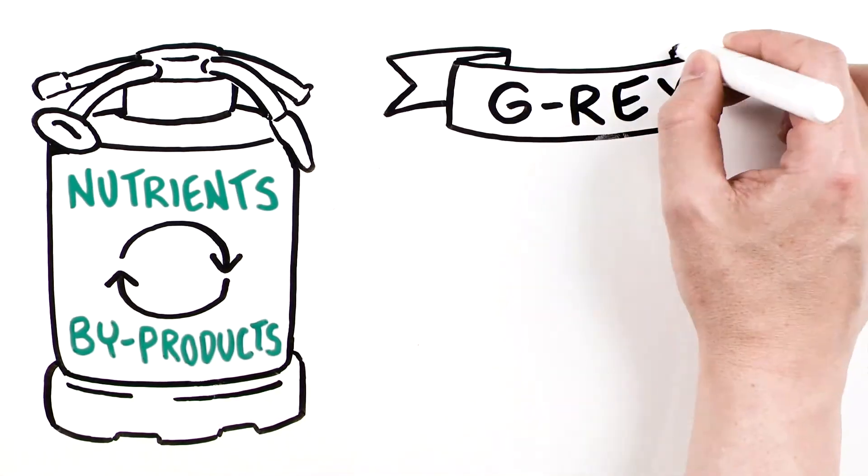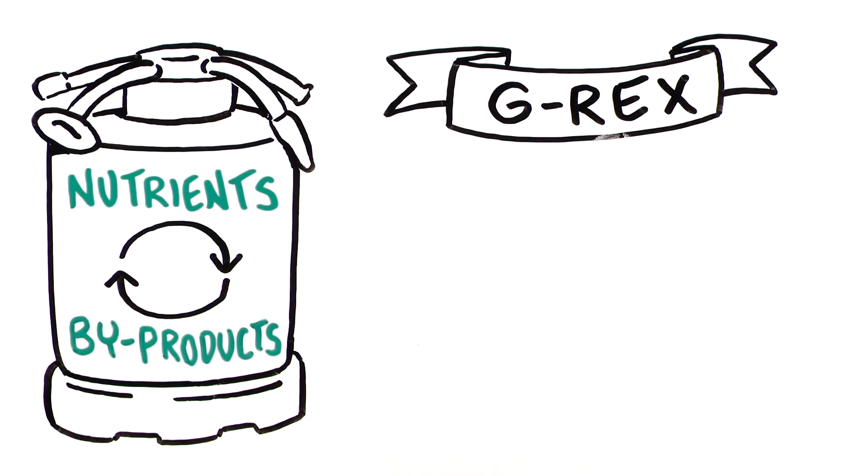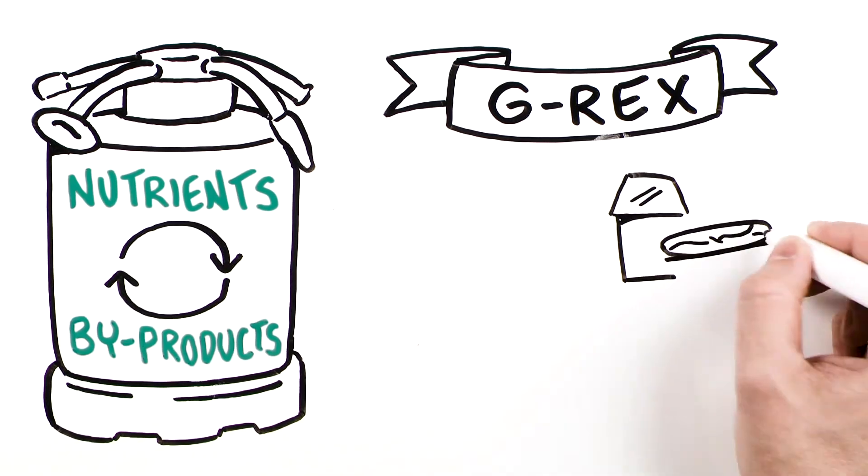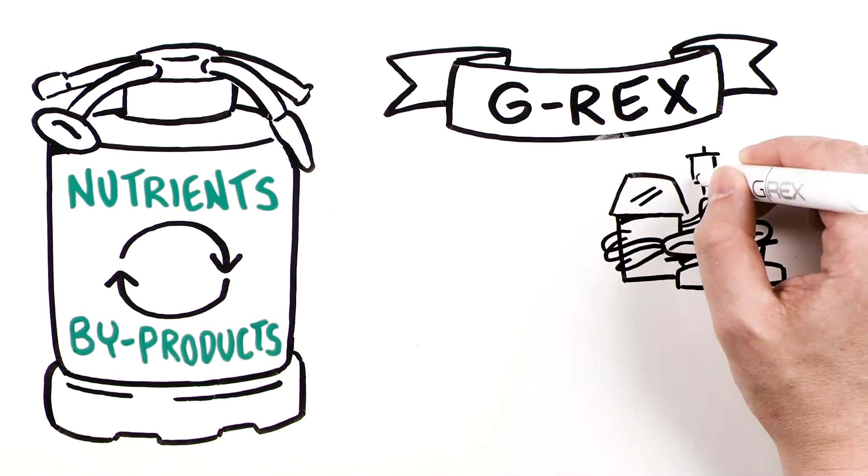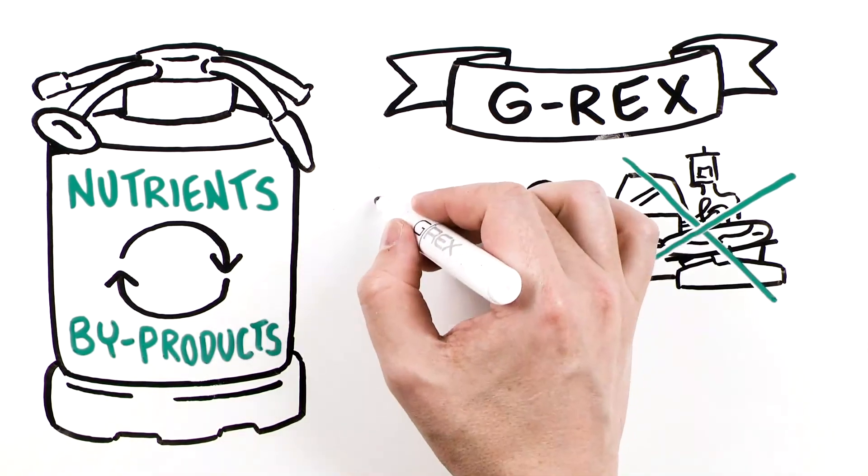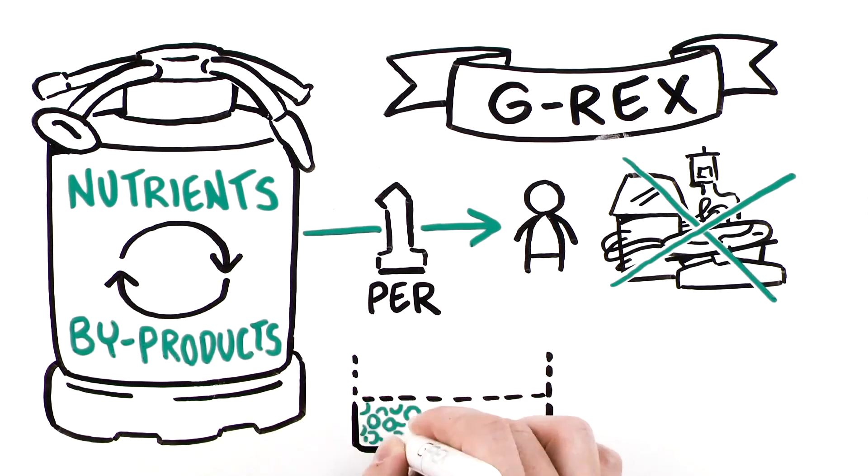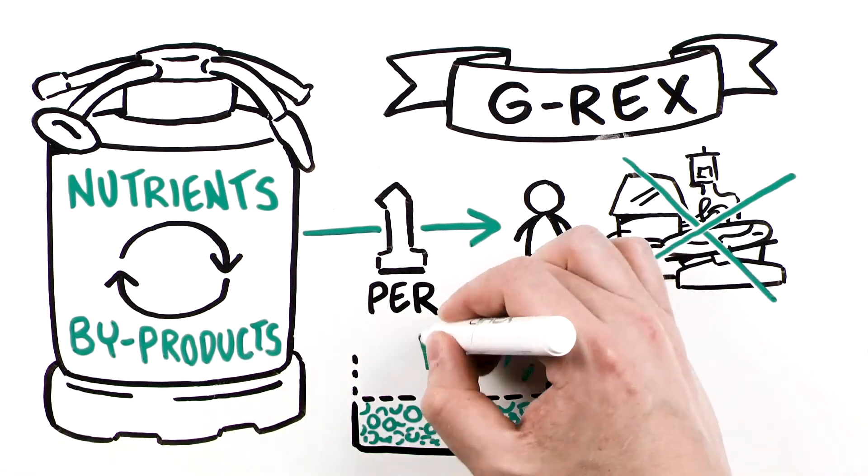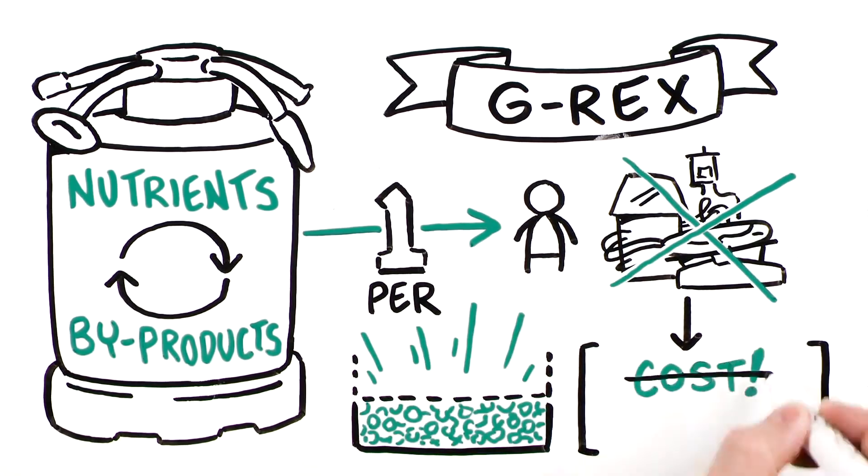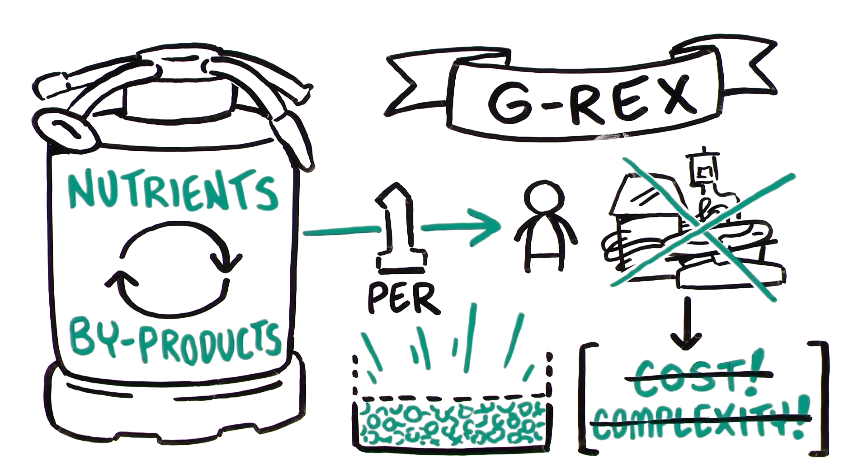G-REX simplicity is the ultimate sophistication that unleashes the potential of T-cell therapy. The industry is now able to move beyond the reliance on one complex machine per patient and into one simple disposable G-REX per patient. High-quality, life-saving cells can finally be reliably produced without the cost and complexity inherent to every other form of T-cell therapy manufacturing.